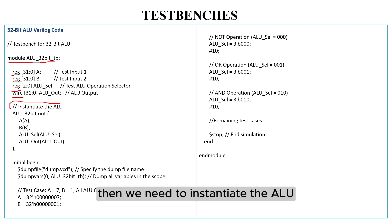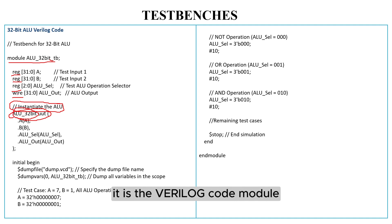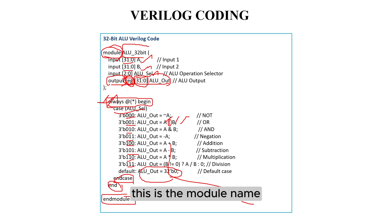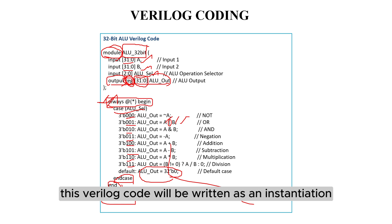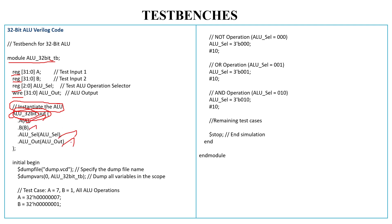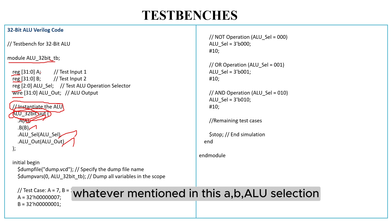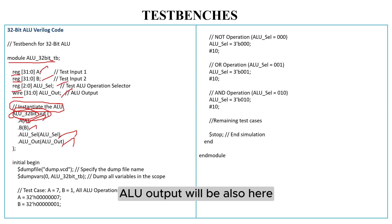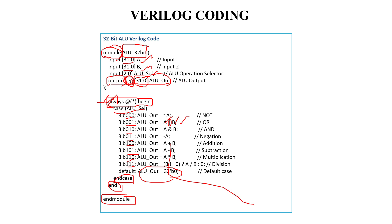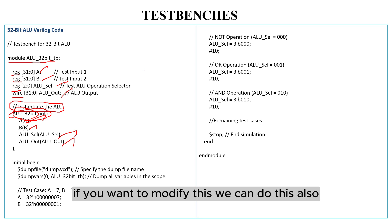Then we need to instantiate the ALU. First, we need to reference ALU_32bit, which is the Verilog code module name. This Verilog module name will be written as an instantiation in the test bench. Whatever is mentioned here — A, B, ALU selection, ALU output — will also be connected here in the instantiation. So we can write this connection mapping, and if we want to modify this, we can do so.